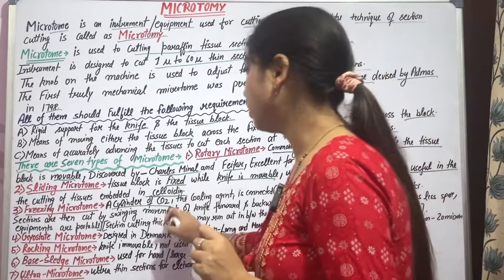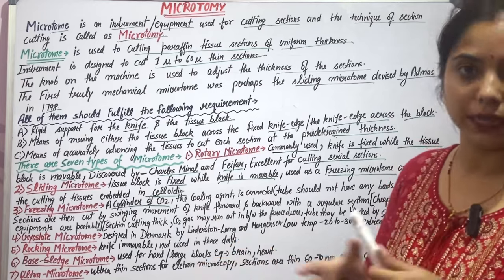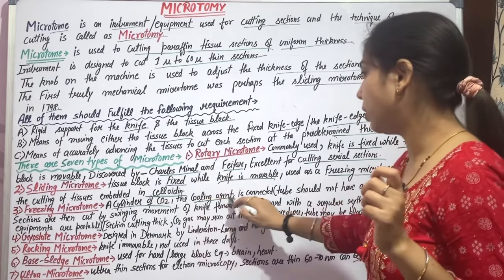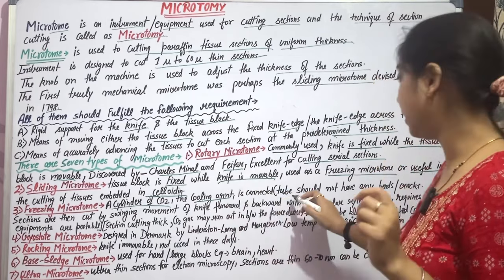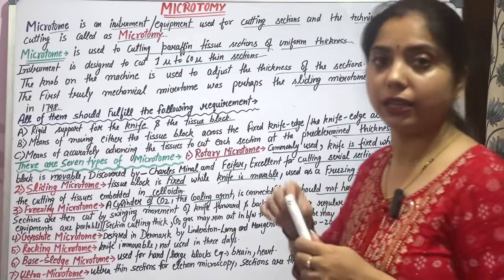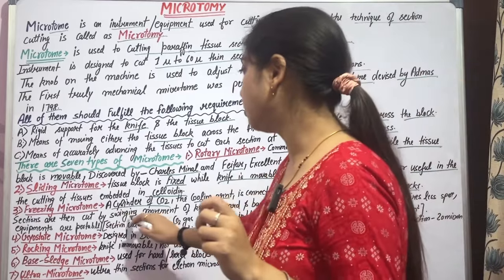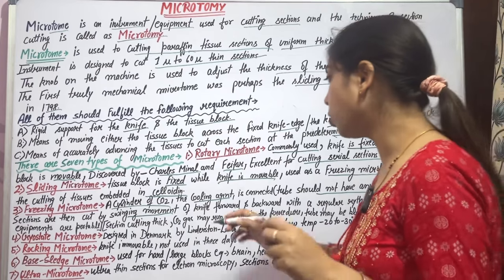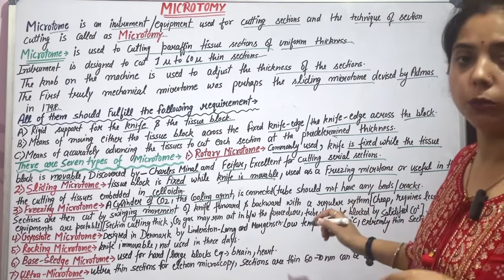The freezing microtome uses CO2 gas from a cylinder connected to the microtome. The CO2 acts as a cooling agent and is connected via a tube. The tube should not have any bends or cracks. Sections are cut by a swinging forward and backward movement of the knife with a regular rhythm.